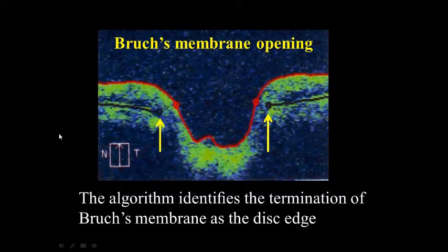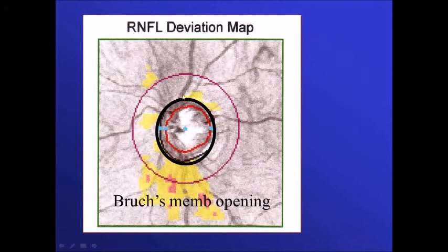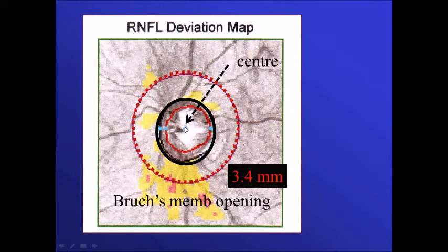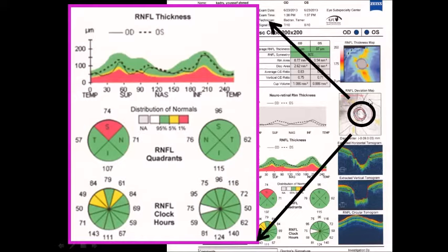The machine checks the end of Bruch's membrane to define the limits of the disc, then locates the center of this area and draws a circle with a diameter of 3.4 mm from the center. The thickness all around this ring is measured and displayed for both the right and left eye. If the thickness is within the normal range it falls in the green zone, but if abnormal it falls in the yellow or red zone.